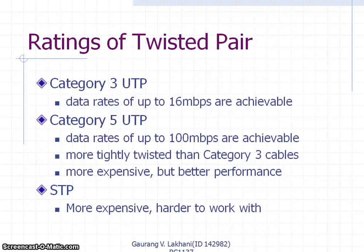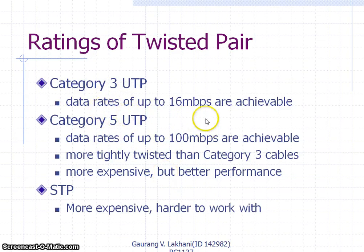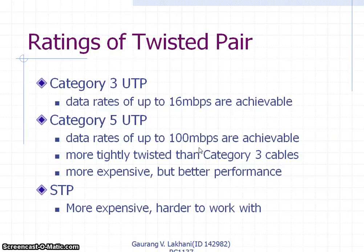UTP cables are normally rated by category. Category 3 UTP supports speeds of up to 16 Mbps. Category 5 UTP supports data rates of up to 100 Mbps and is more flexible in terms of performance, though naturally the cost is higher. STP is more expensive and harder to work with.